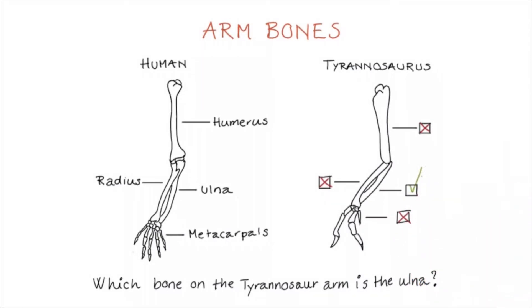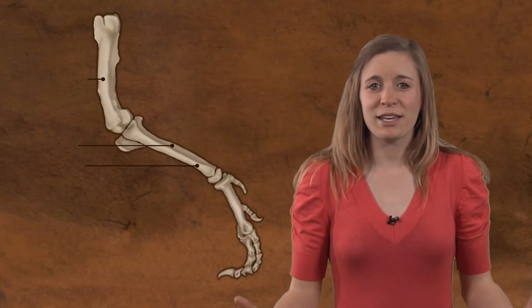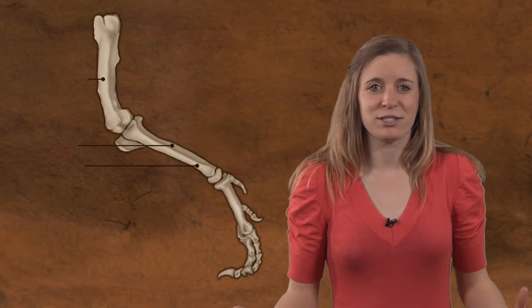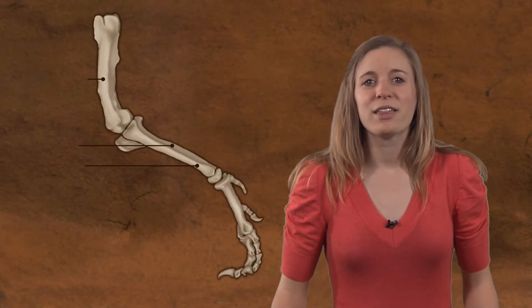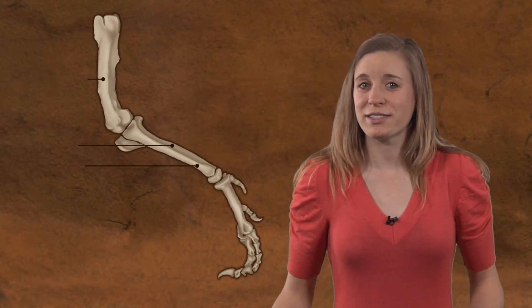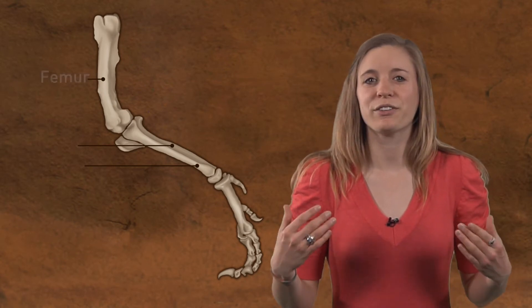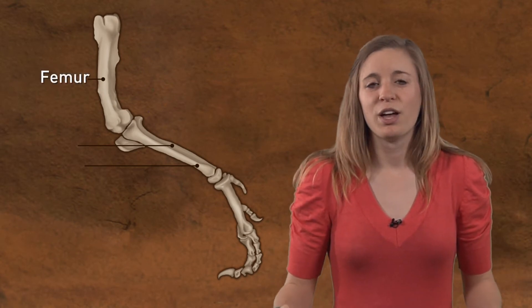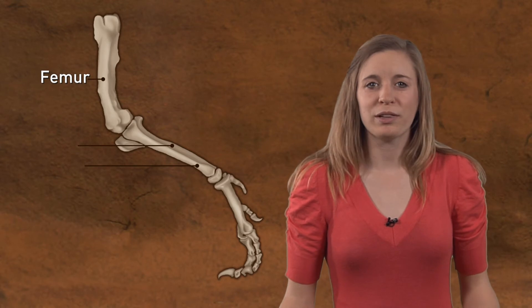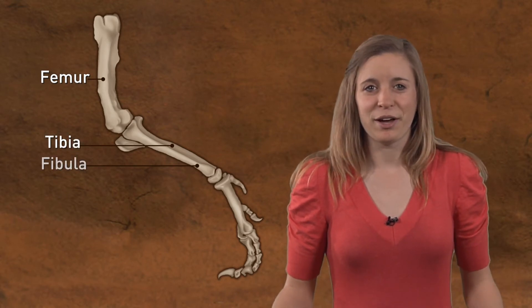The same arm bones are present in both humans and Tyrannosaurus. We humans have the same bones in our legs as well. The upper leg bone of Tyrannosaurus rex, which is the same one in my leg, is called a femur. The two lower leg bones are known as the tibia and fibula.